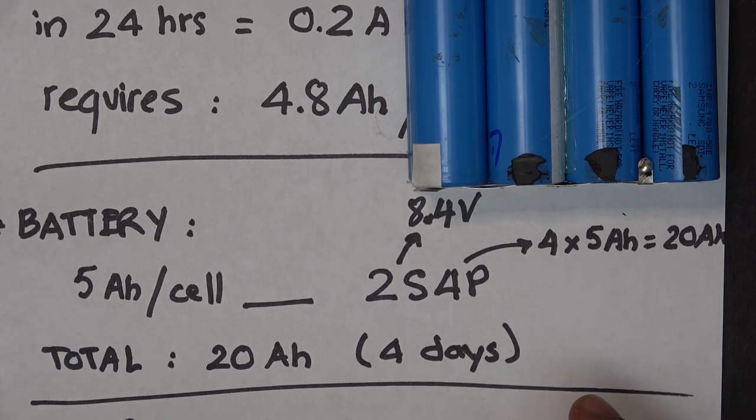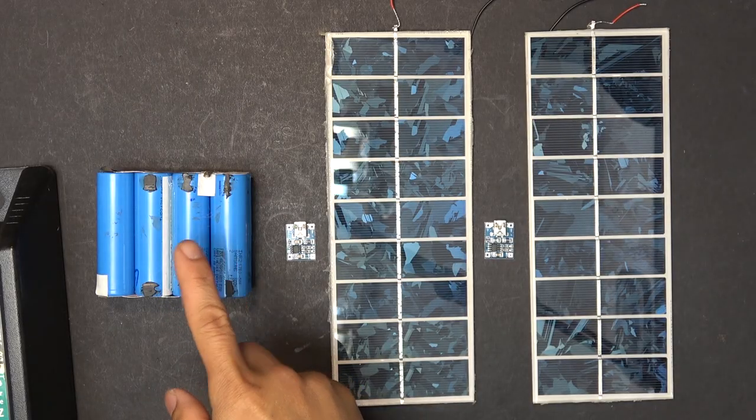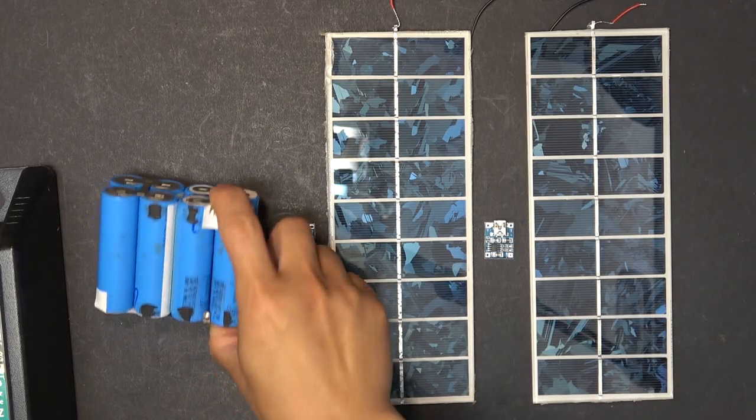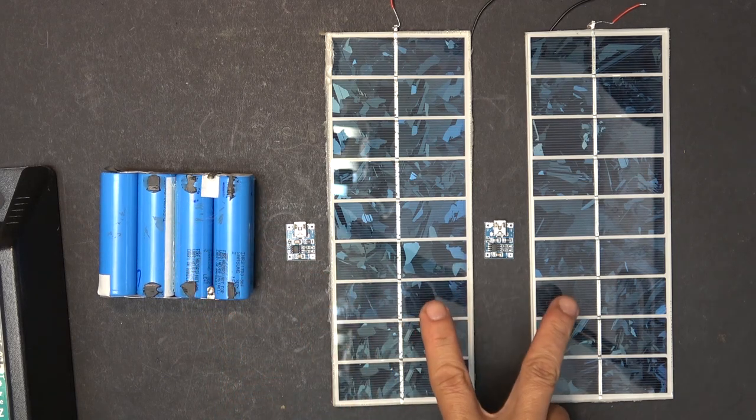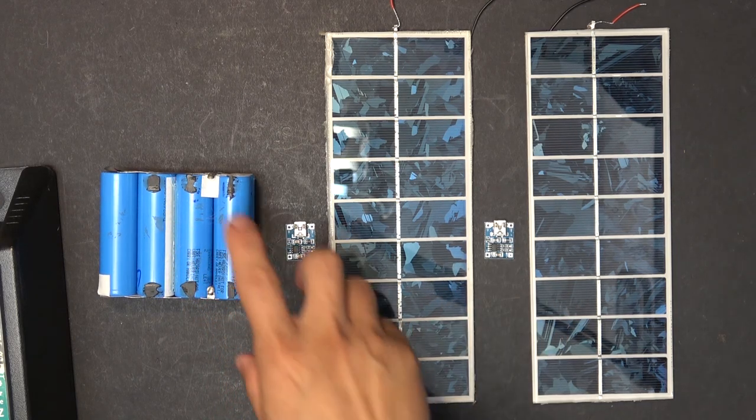I need to account for the days when it's cloudy or rainy, when my solar panel is not producing enough power to charge the battery. The battery is a 2S lithium-ion battery so it needs to be balance charged. I'm using two 5-volt solar panels to charge the battery.